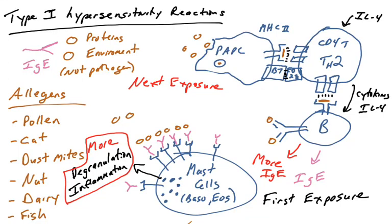So we're talking about type 1 hypersensitivity reactions, which involve IgE binding to proteins, and IgE causing degranulation of mast cells and other granulocytes.